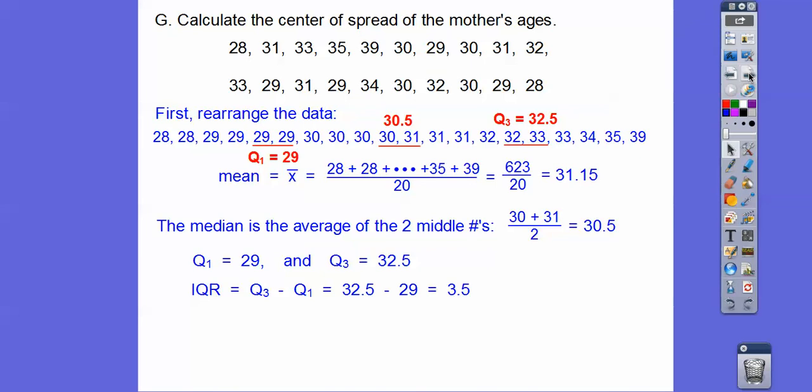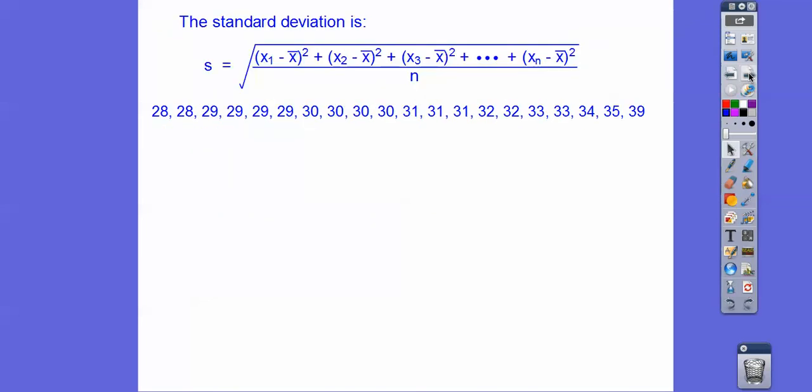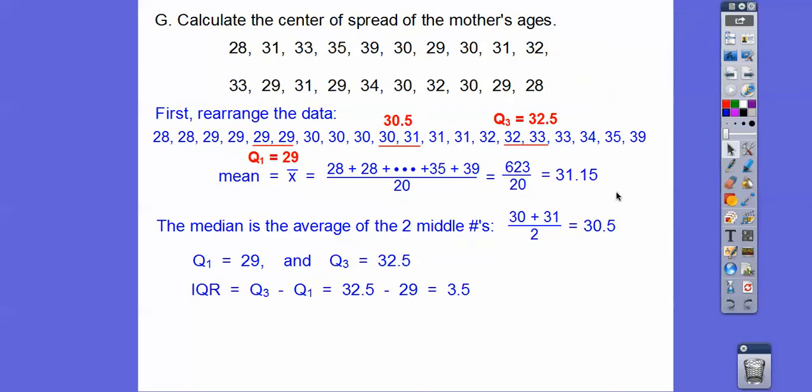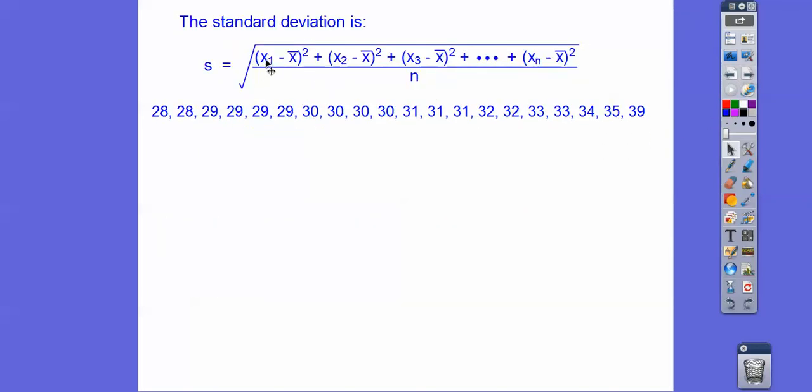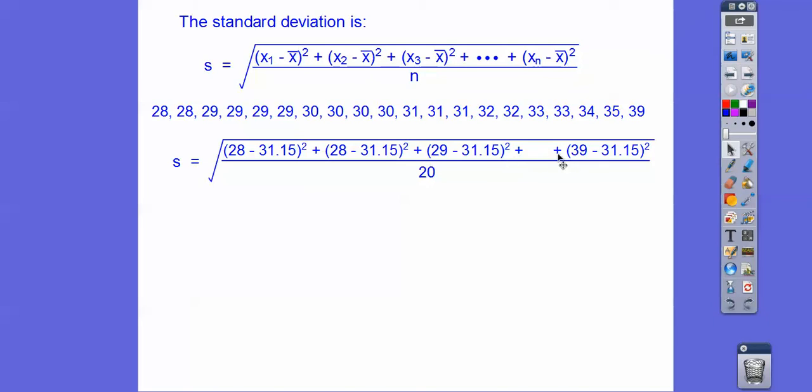So there's Q1 and Q3. So the IQR is just the difference of those, which is 3.5. Now here's the barrier, you guys. So now we've got to find the standard deviation. Remember, the mean was 31.15. So we're going to do each number, 28 minus 31.15 squared. And then the next 28 minus 31.15 squared. And keep doing that all the way up to 39 minus 31.15 squared. And then we take that and divide it by 20.